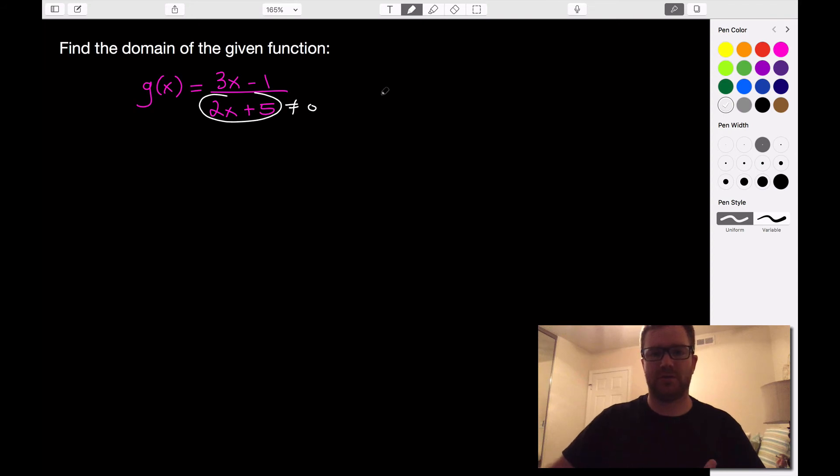So let's solve this. So we figure out, what value would make this zero? So subtract 5, so we have 2x cannot equal negative 5, divide by 2, and we get that x cannot equal negative 5 halves.